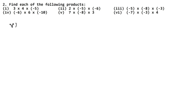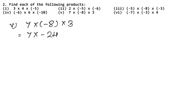Let's do the 5th part. In the 5th part: 7 multiplied by minus 8 multiplied by 3. Let's multiply the last two first: minus into plus is minus, and 8 × 3 = 24. So we get minus 24. Now 7 has no sign, so it is plus. Plus into minus is minus, and 24 × 7 = 168. So the answer is minus 168.